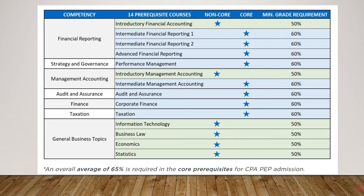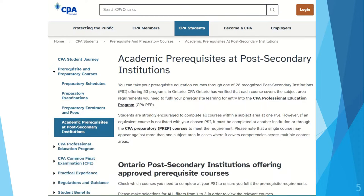Here are the 14 prerequisite courses that everyone has to complete before entering the CPA PEP program. For each non-core and core course, there is a minimum grade requirement that needs to be met. In addition, your overall average of all core courses needs to be 65% or higher to be admitted into the PEP program. CPA Ontario provides a site to help determine if you have completed the 14 prerequisite courses — I will put a link in the description below.